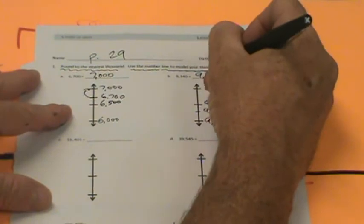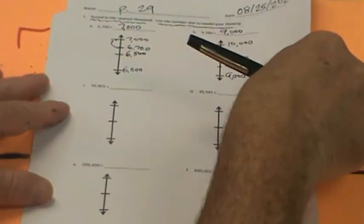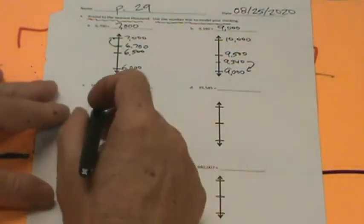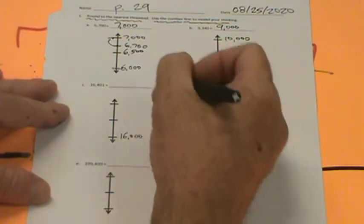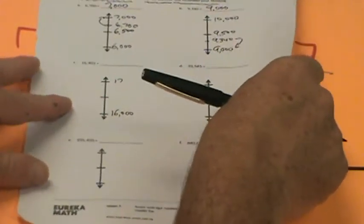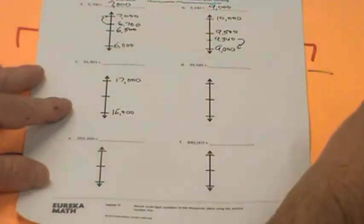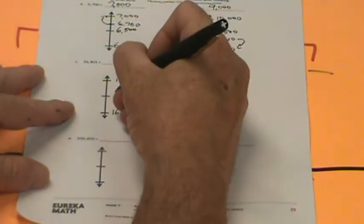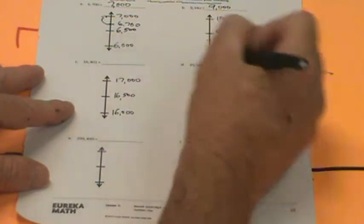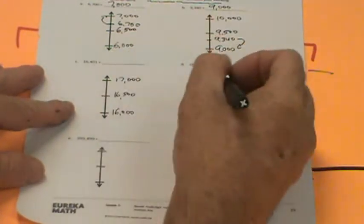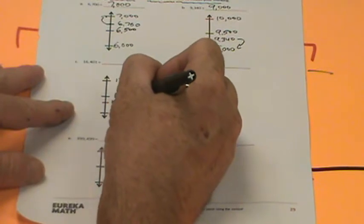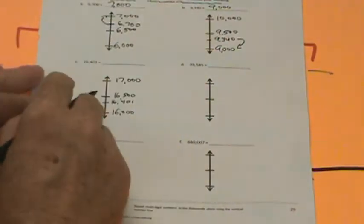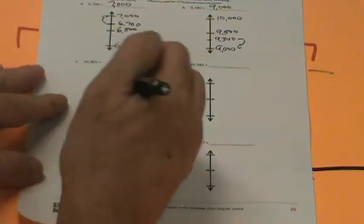Next is 16,401. It's either going to stay 16 or go up to 17, so we'll say 16,000 and up here 17,000. Let's do the midpoint of 16,500. 16,401, is that greater than 16,500 or smaller? It is smaller because there's four hundreds and that's five hundreds. So we're closer to 16,000.